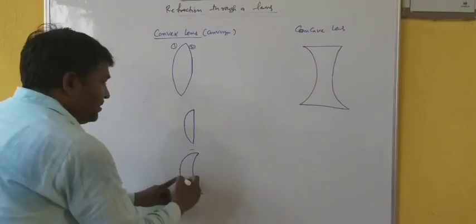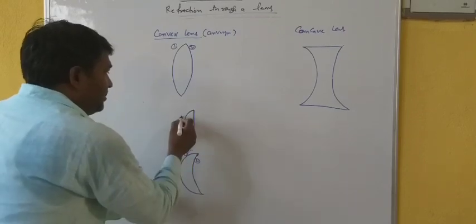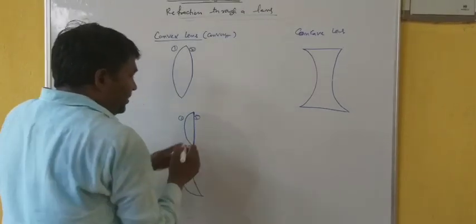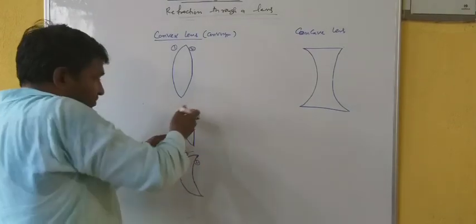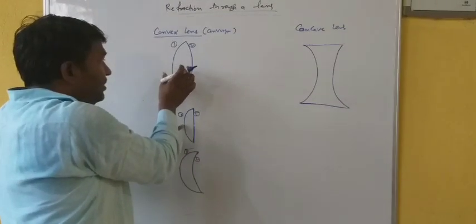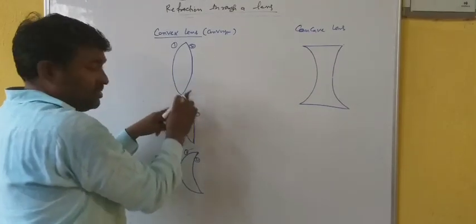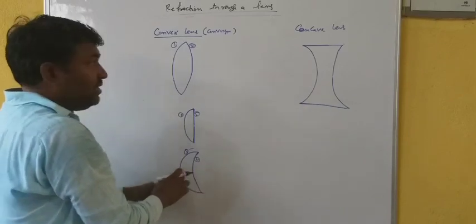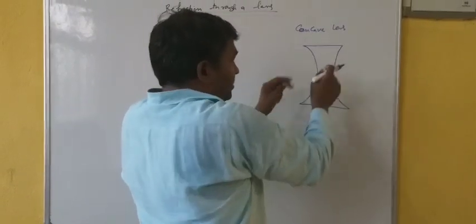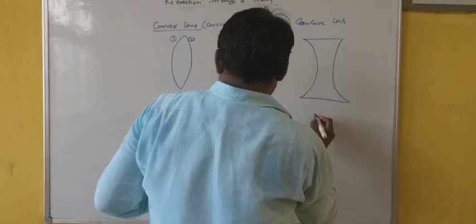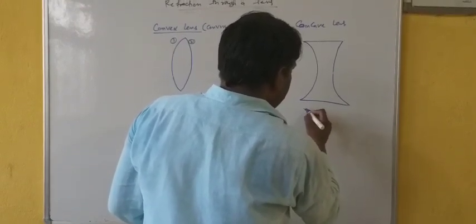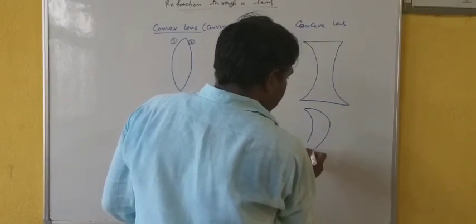This one is convex and the second surface — if the second surface is plane, then it is called plano, and this one is convex since it is bulging in the middle, that is why planoconvex lens. Both spherical and both bulging in the middle — that is biconvex. Similarly for concave: biconcave since both are shrinking, and convexo-concave.